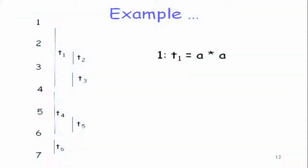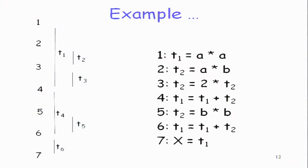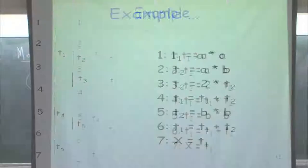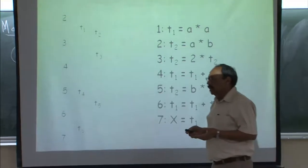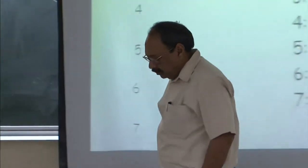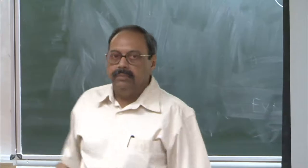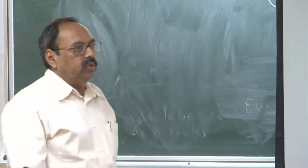In the previous class we started looking at next-use information and were trying to minimize the number of temporaries. Actually, we do not minimize the number of temporaries — what we do is use next-use information at the time of code generation to ensure that when we use registers and temporaries, we use fewer of them. So when we talk about code generation, that is when we use the next-use information.